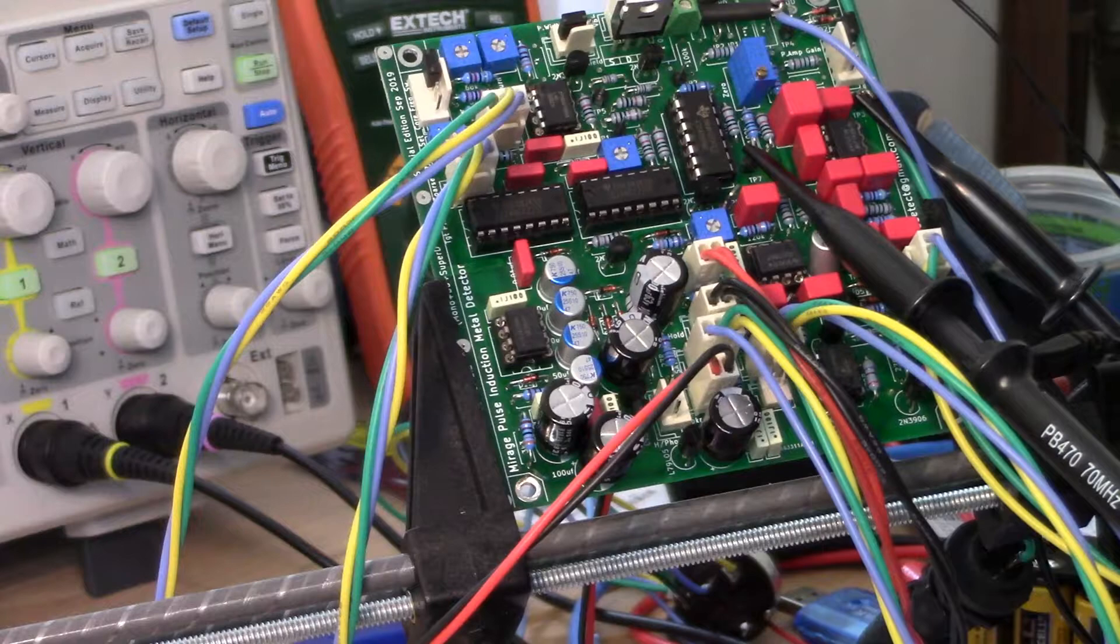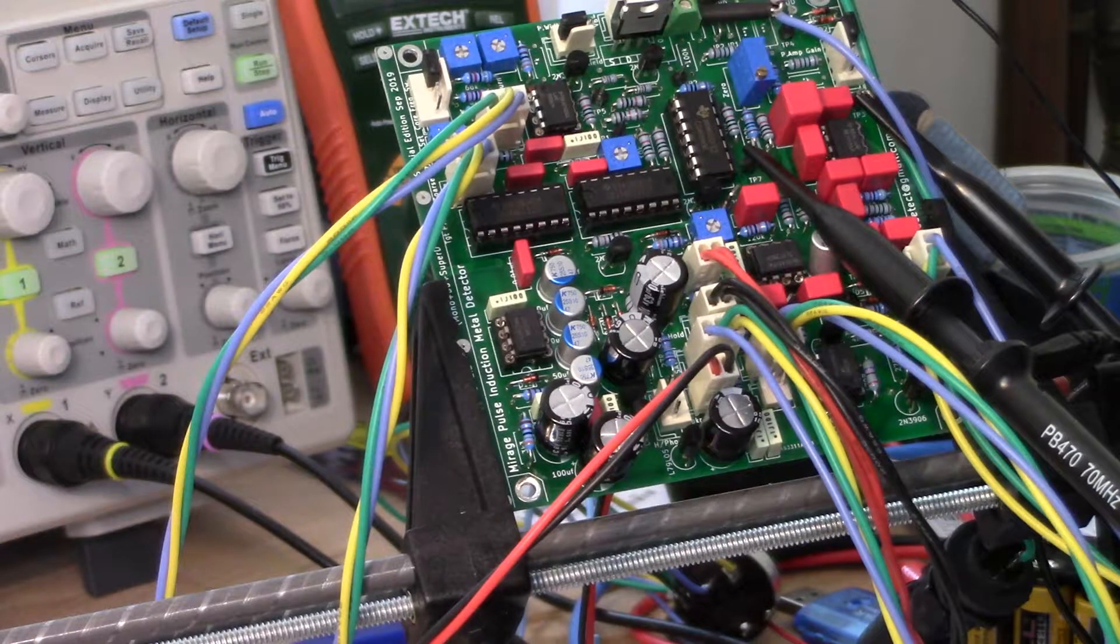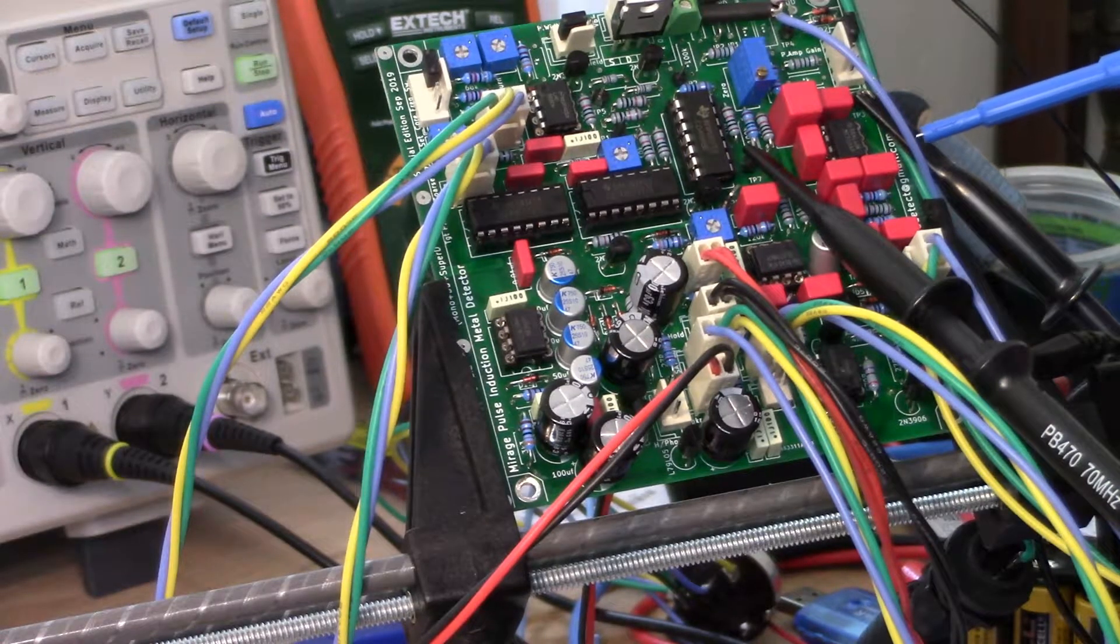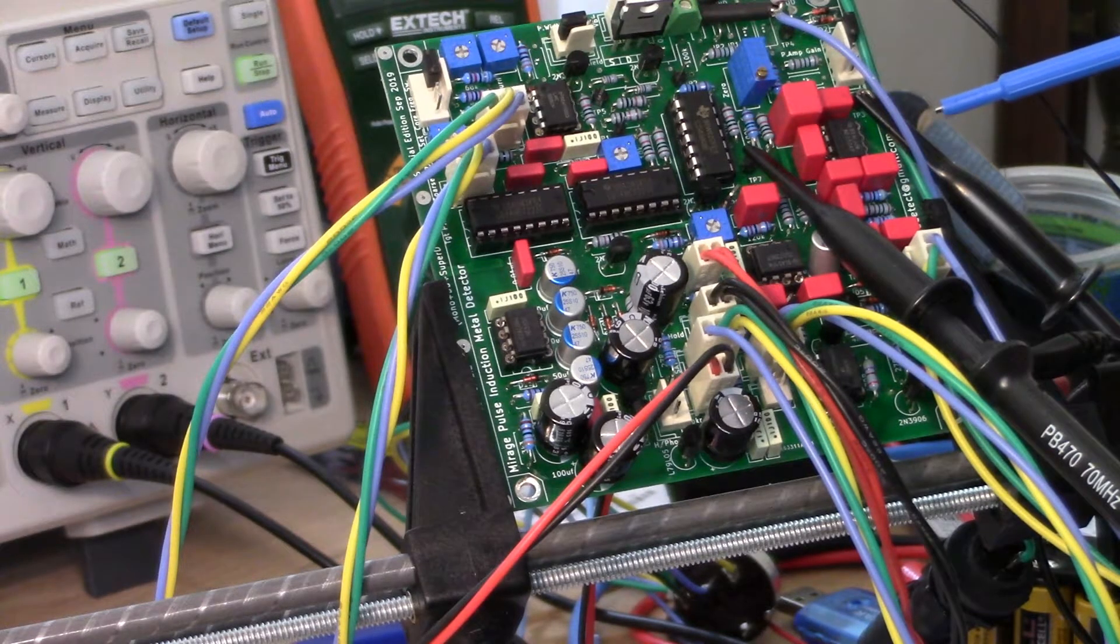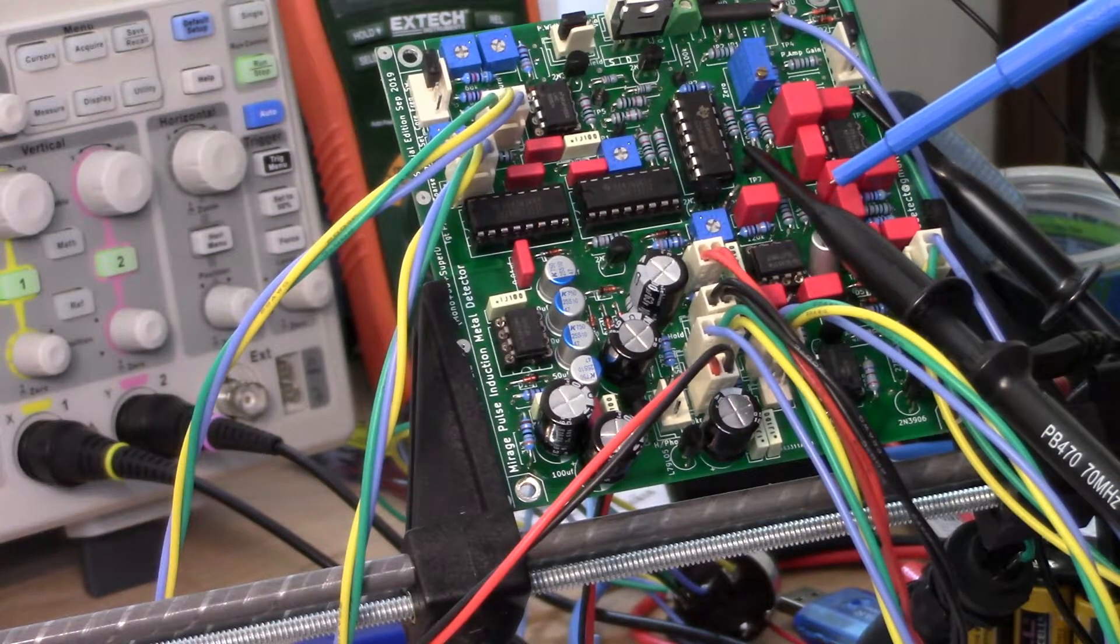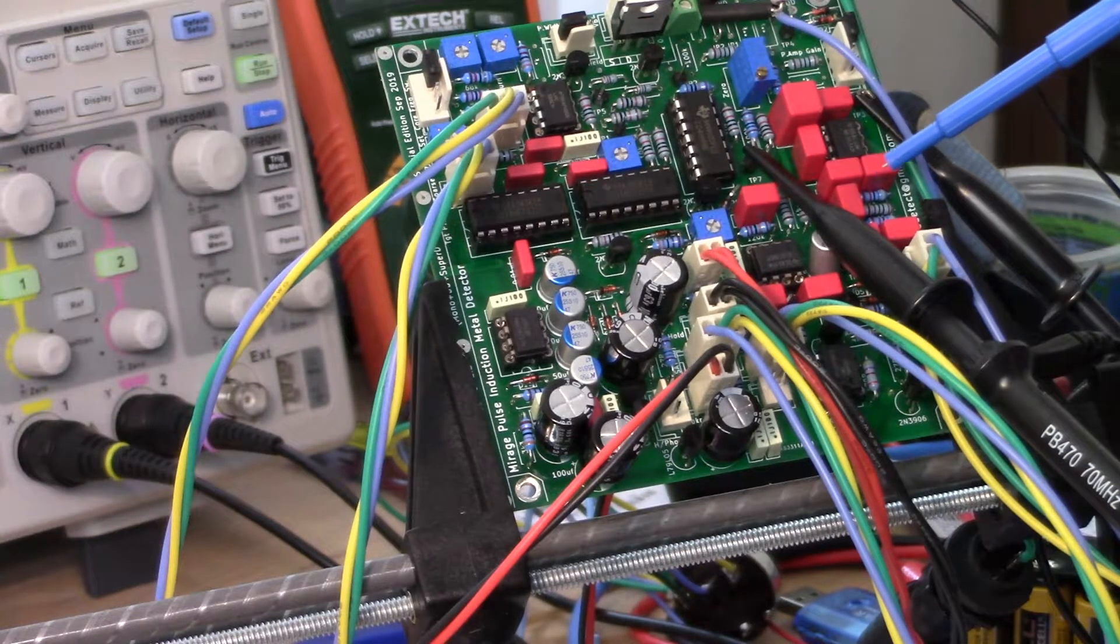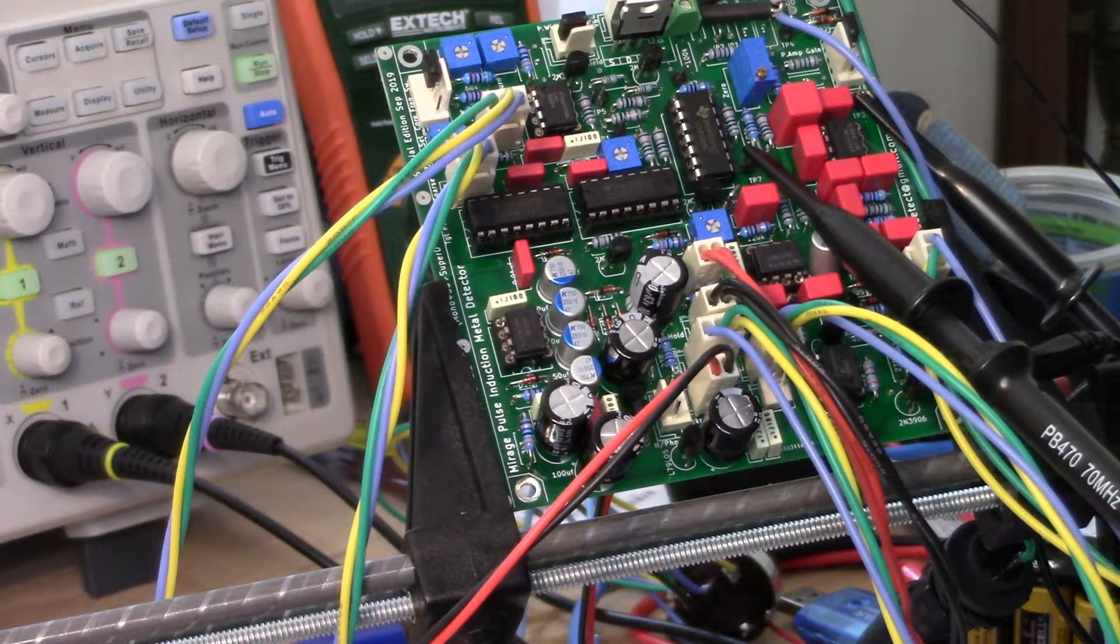So we're on test point three, which is the preamp output. The preamp is the 5534 right here. And we're also on test point seven with our channel two probe, and that's the first sample pulse delay. The scope is set to 10 microseconds, first channel's at two volts, channel two's at five volts.